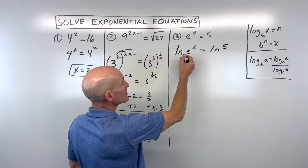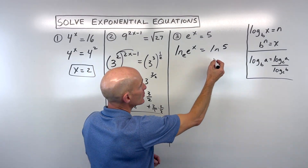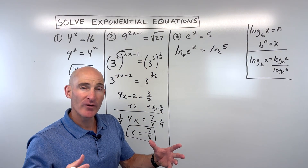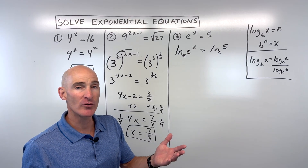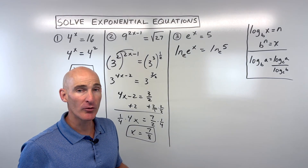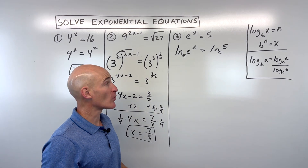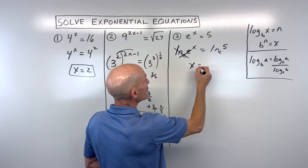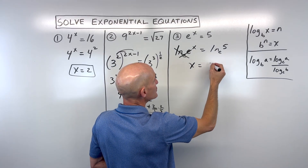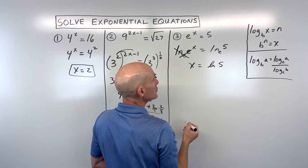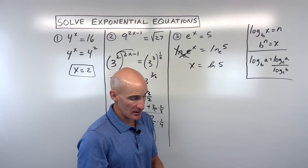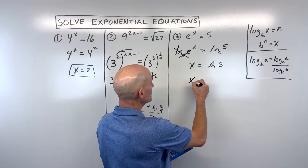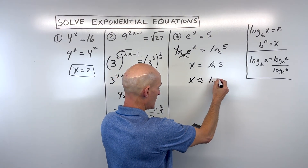Natural log, ln, is really the same as log base e. Exponential functions and logarithmic functions are inverses of one another — they undo each other, like multiplying and dividing. So they'll undo one another and we're left with x equals natural log of 5. That's an exact answer. If we want an approximation, we can go to our calculator: natural log of 5 is approximately 1.61.